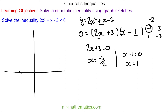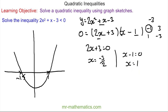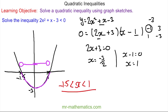And x minus one equals zero, so x will equal one. We can sketch our graph with roots at negative 1.5 and at x equals one. The y-intercept will be at negative three. The solutions have to be less than zero, so we're looking below the x-axis. Our solution is: x is less than one but greater than negative 1.5. This is our solution.